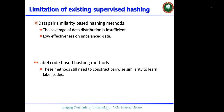However, when generating the label hash code, they usually need to define the pairwise similarity between the multi-labels, which means these methods still have the same problems as data pair similarity-based hashing methods.